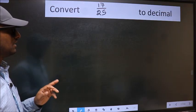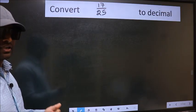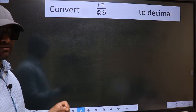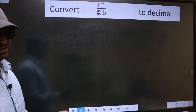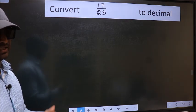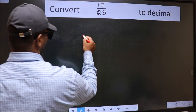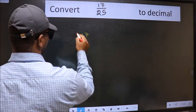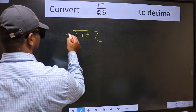Convert 17/25 to decimal. To convert to decimal, we should divide it. To divide, we should frame it in this way: 17 here and 25 here.